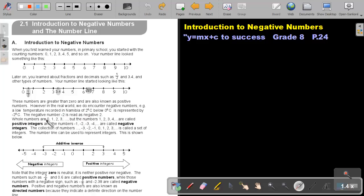Whole numbers are 0, 1, 2, 3, but the numbers 1, 2, 3, 4 are called positive integers. And the numbers negative 1, negative 2, negative 3, and so forth, are called negative integers.